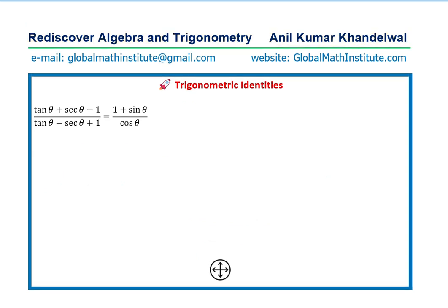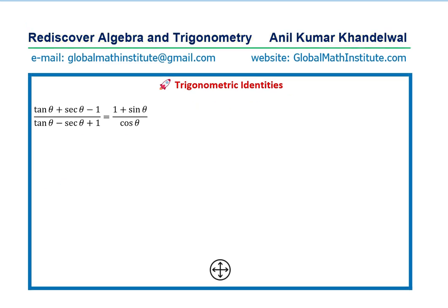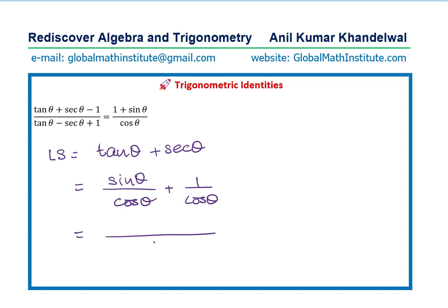The left side is equal to tan θ + sec θ. Tan θ, as you know, is sin θ over cos θ, and sec θ is 1 over cos θ. This equals sin θ over cos θ plus 1 over cos θ, which is 1 + sin θ over cos θ, the right-hand side. You see how systematically we are in a position to prove the identity.